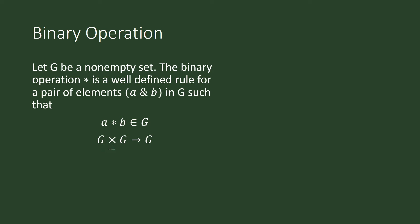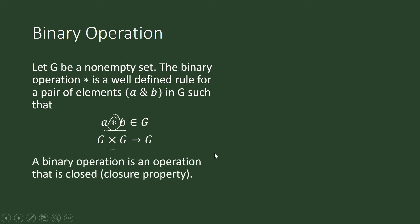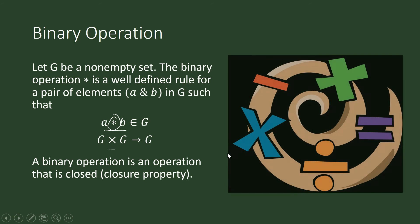G cross G means you are pairing elements of G with other elements that are also in G. You pair two elements and they produce a result. The outcome of that pairing depends on how you define your operation star, and the result is also to be found in set G.